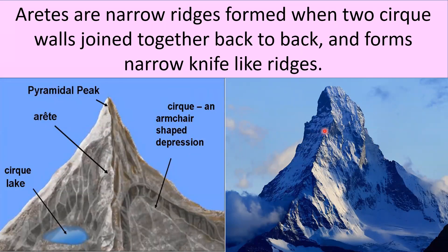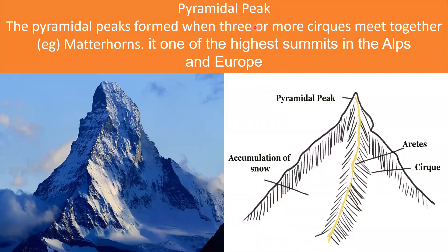When two cirque structures meet or join together, this narrow sharp ridge forms, which is called an arête. Pyramidal peaks are formed when three or more cirques meet together. The Matterhorn Mountain — one of the highest summits in the Alps of Europe, formed on the border of Switzerland and Italy — is an example of a pyramidal peak formed when three or more cirques meet together.